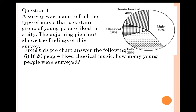From this pie chart we have to answer some questions. The first question is: if 20 people like classical music, how many young people were surveyed? This is a tricky question. They give us the number of people who like classical music. Since 10% of people like classical music, those 10% represent 20 people. So with this information we have to find out the total number of people surveyed.